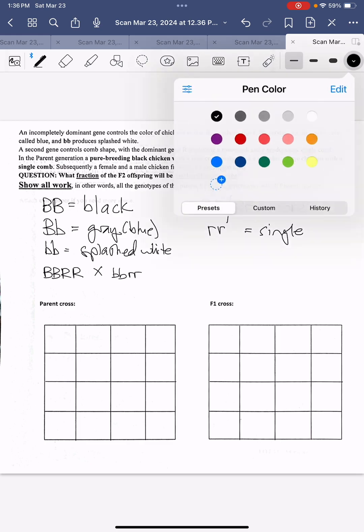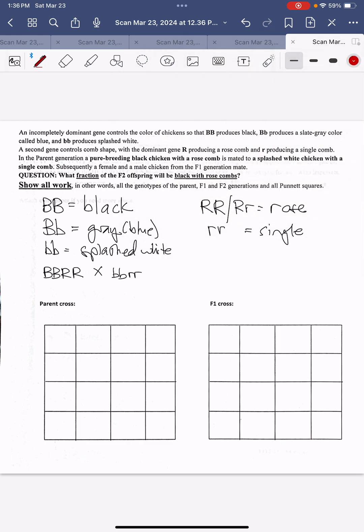Now, I'm going to show you a crossover trick that you can use to determine what will be the gametes that we put in this first Punnett square. We take the first B with the first R. We take the first B with the second R. Then we do the same with the other parent. First B with the first R. First B with the second R.